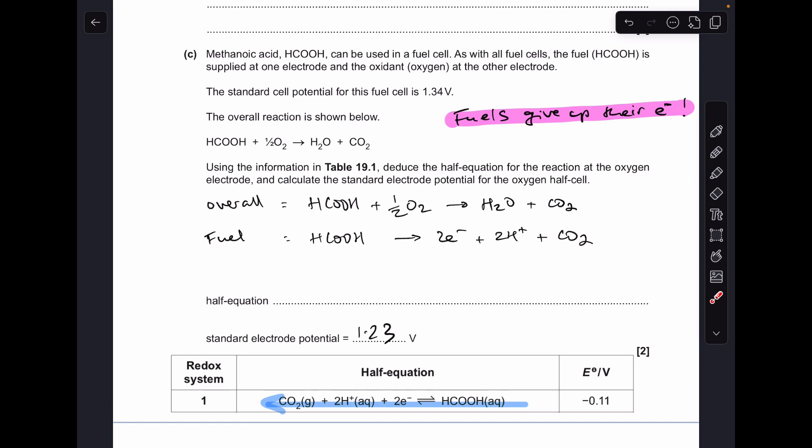And finishing off with the half equation for the oxygen half cell. There's the overall equation, there's the fuel half equation, remember it's running backwards because it's the less positive standard electrode potential. So what else do we need when we add to this to make that? So you can see we've got the HCOH, but we need half a mole of O2. Looking at the products, we need a mole of H2O.